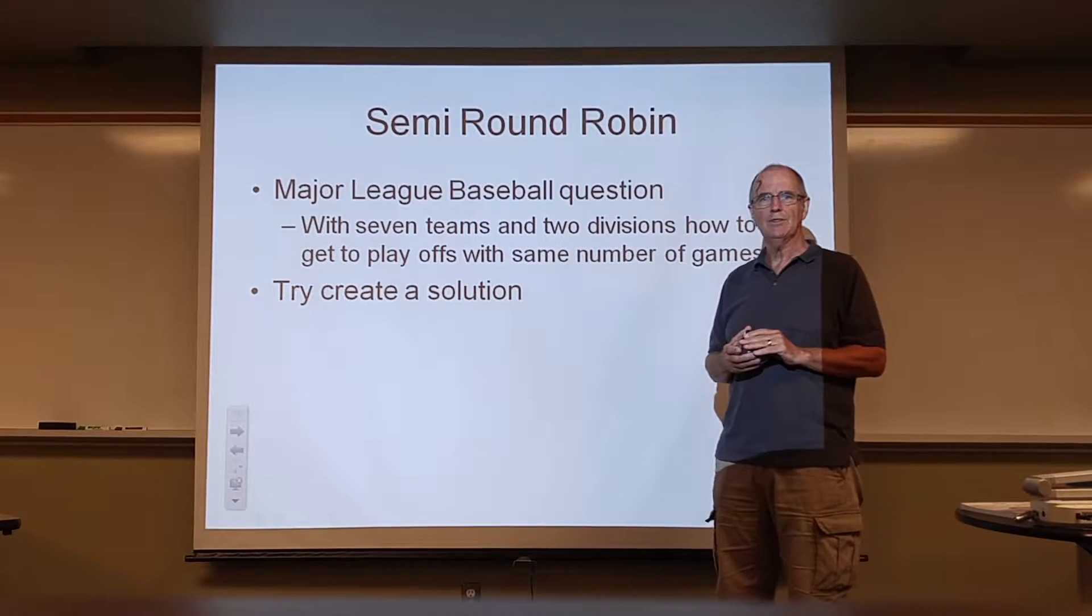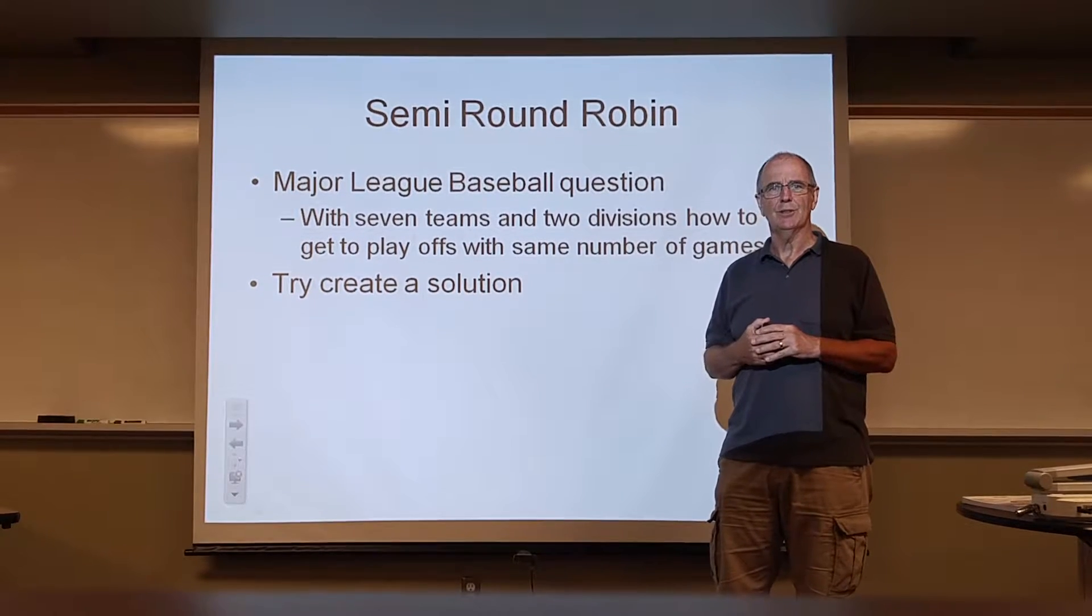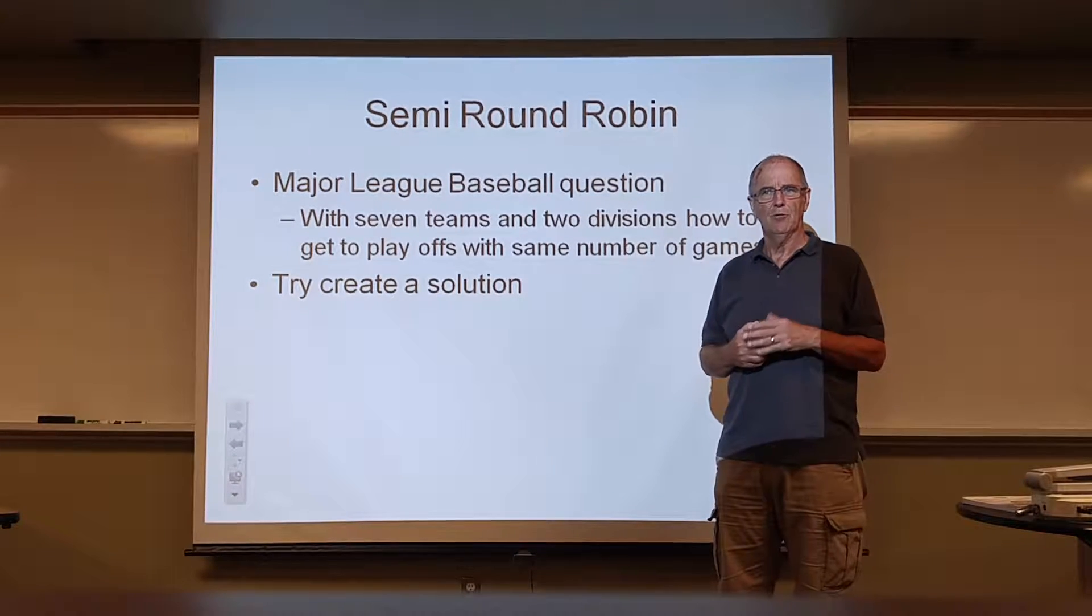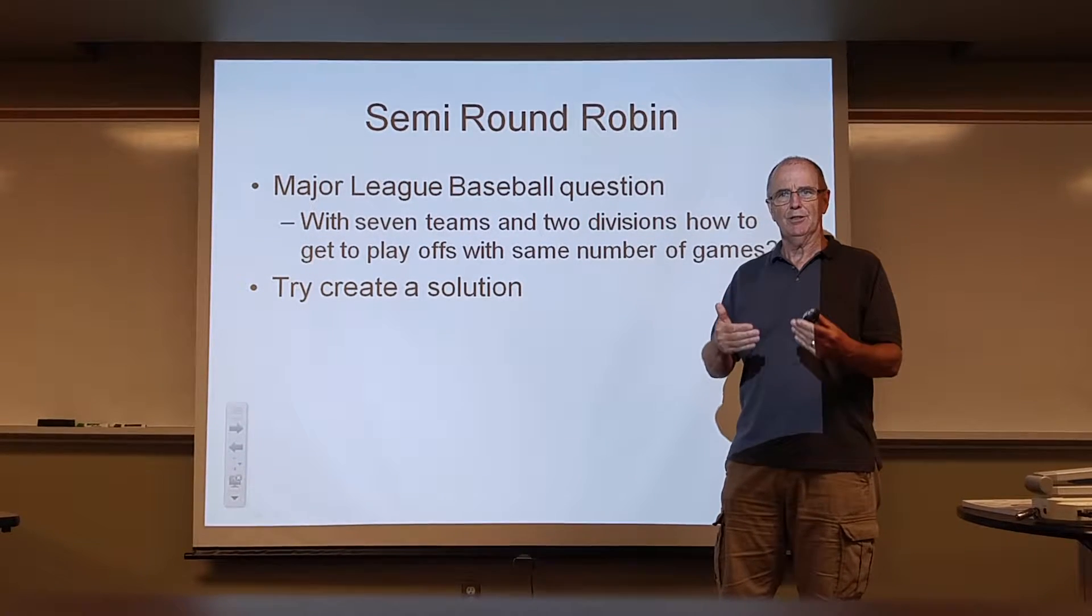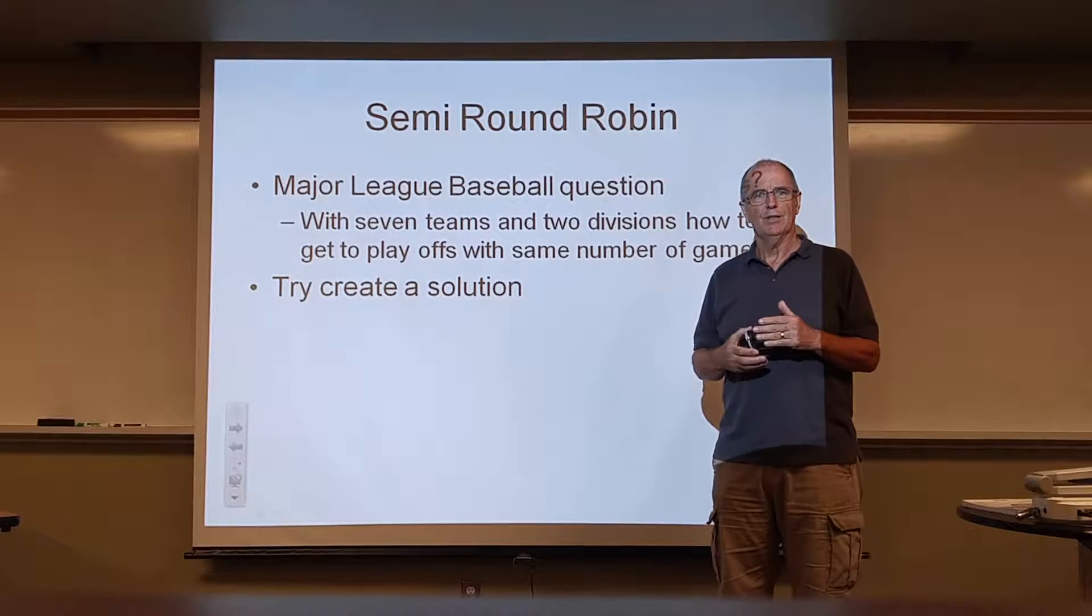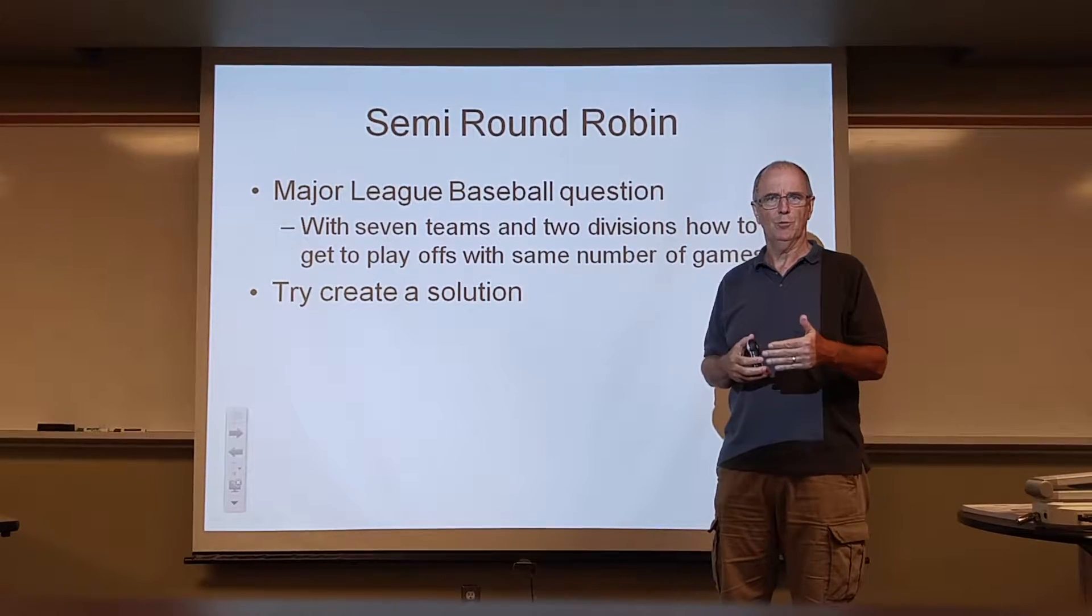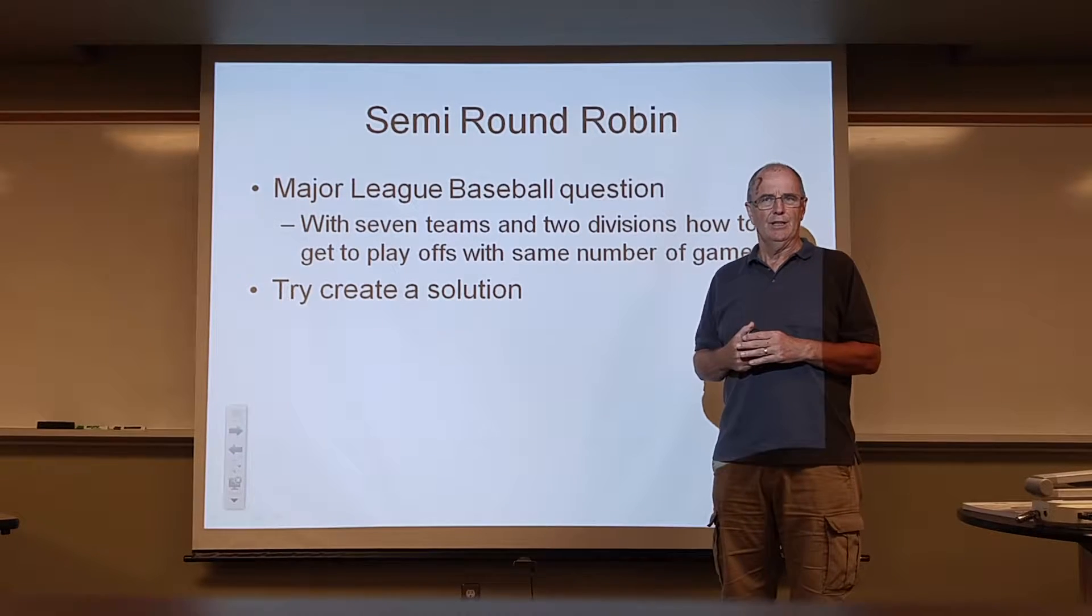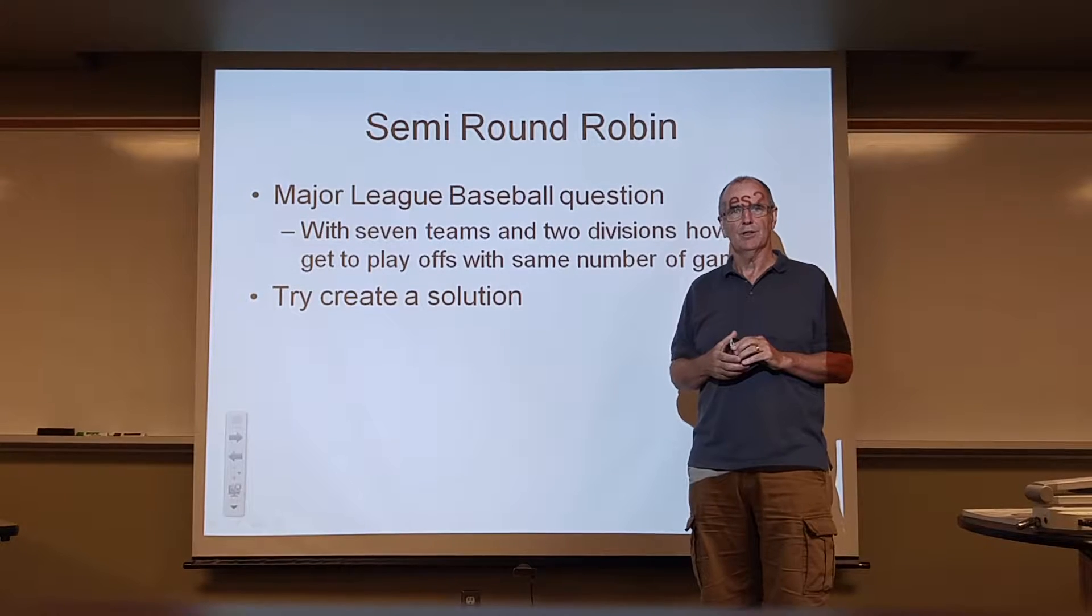But what happens if you have seven teams? That means one pool has three entries, the other pool has four entries. One pool is playing two games, the other is playing three. Which also means that by the time you get to the playoffs, the first round of the playoffs, the one team would be into their third pitcher, the other team would be into their fourth pitcher. So it would disadvantage the team that's playing more games, particularly in baseball.